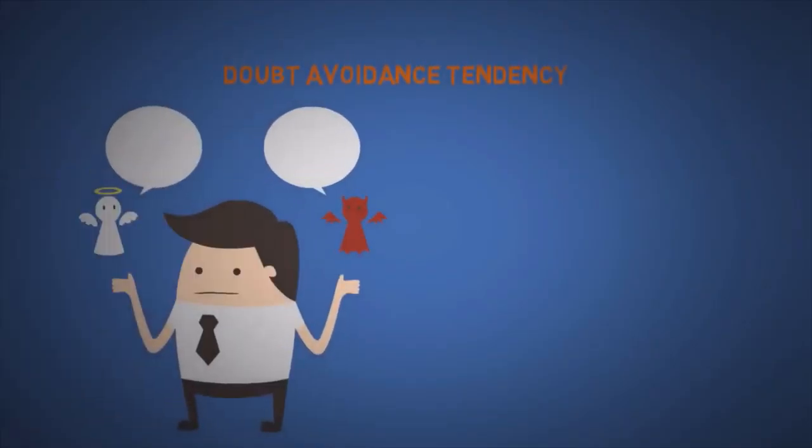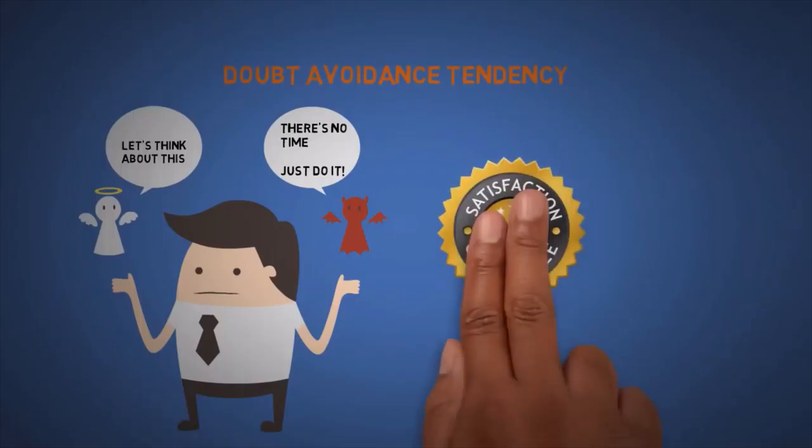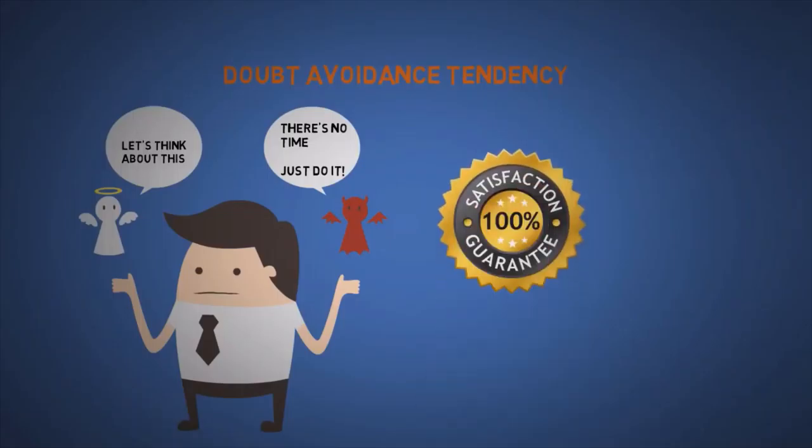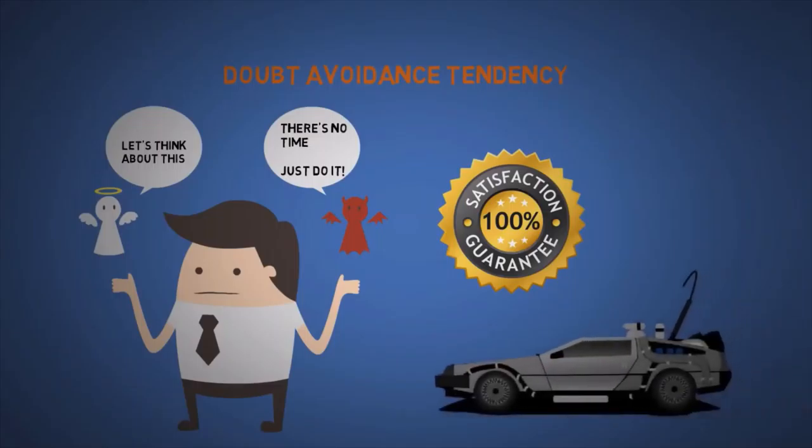The fourth is doubt avoidance tendency. If we are unsure about a decision, we try to quickly remove any doubt by making an ill-informed, quick decision. So if you want to become more persuasive, then simply increase your certainty. Like if you don't enjoy the rest of this video, then I promise you a free time machine so I can refund your time. No questions asked.